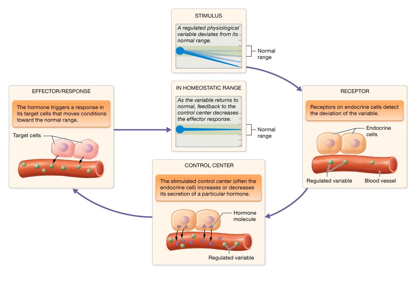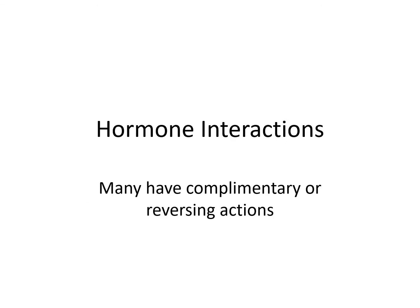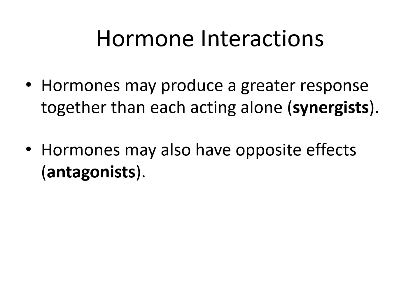Hormone interactions: many hormones have complementary or reversing actions. Some hormones work together for a similar response — these are called synergists. The response of two synergistic hormones together is greater than each hormone by themselves, which is the definition of synergism. Hormones that have opposite effects are called antagonists — for example, one hormone may raise blood sugar while another decreases blood sugar.